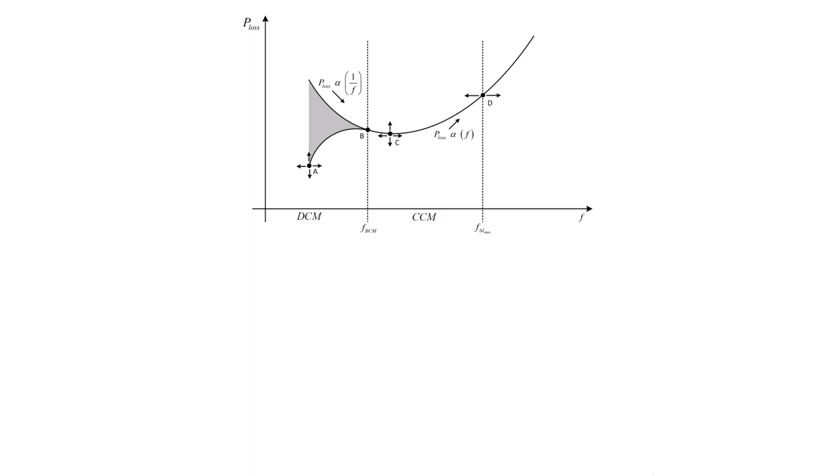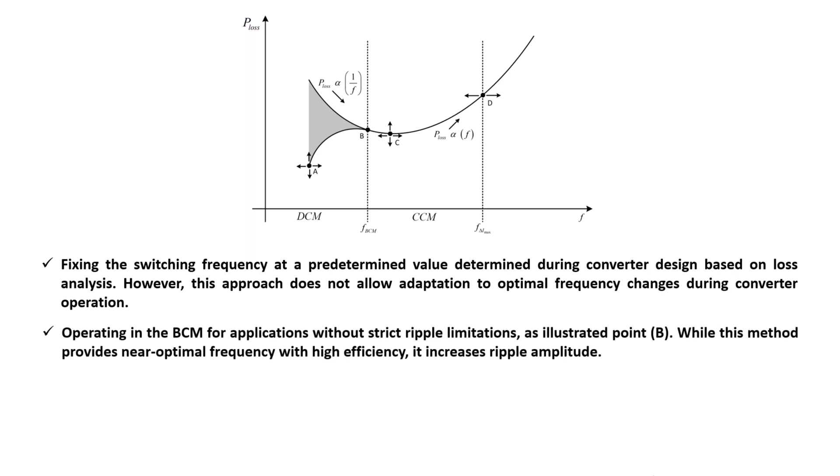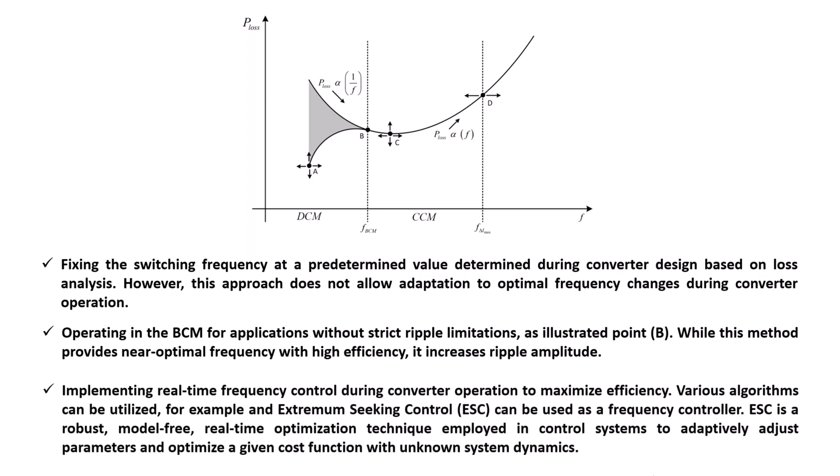We proposed three approaches for setting the switching frequency: fixing it at a predetermined value based on loss analysis, operating at DCM for applications without strict ripple limits, or implementing real-time frequency control for efficiency optimization such as extremum seeking control.